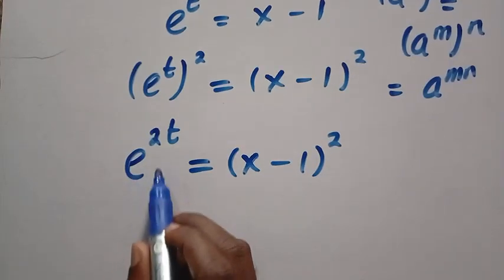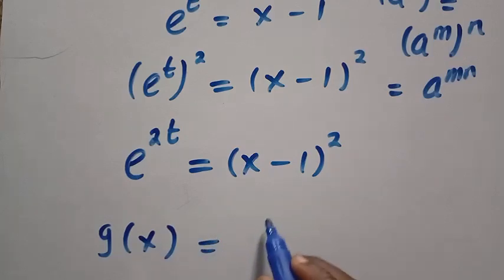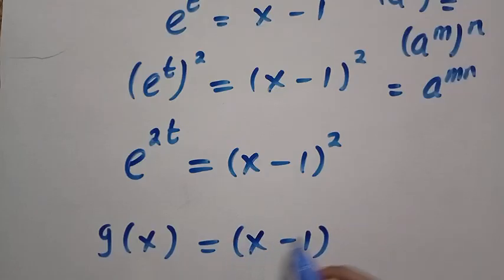We have e^(2t) as x minus 1. And g of e^t plus 1 is given as x. Since we have replaced it, this equals e^(2t) is given as (x minus 1) raised to the power of 2.